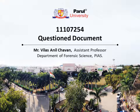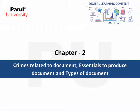Today in this lecture we'll be discussing about the paper titled 'Question Document' and the paper number is 11107254. We'll be discussing about Chapter 2, under which you will be introduced to the different crimes which are related to document, the essentials to produce documents, and different types of documents.